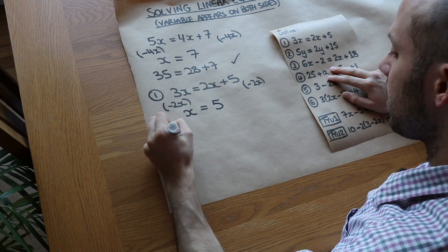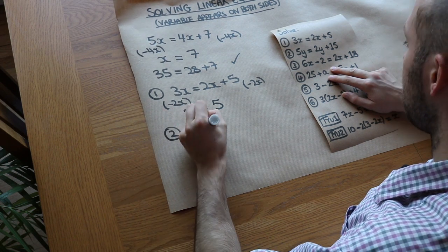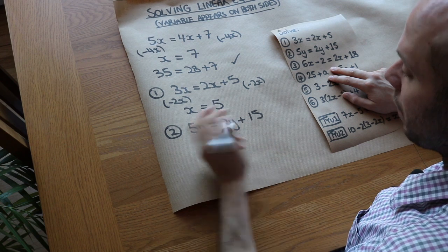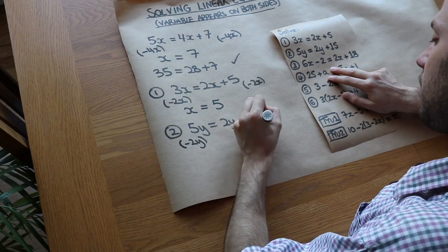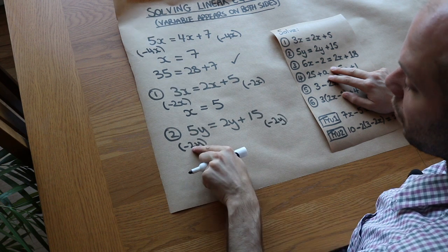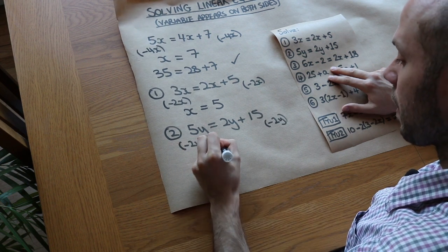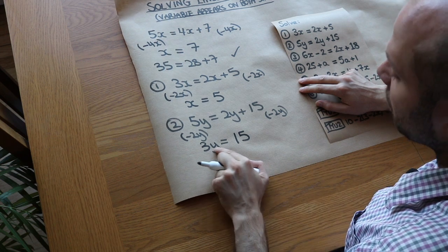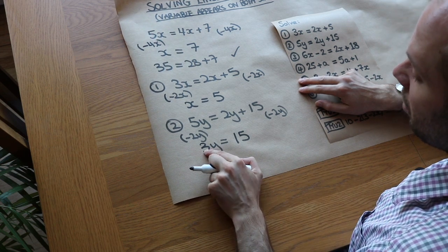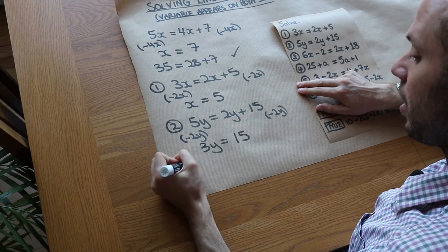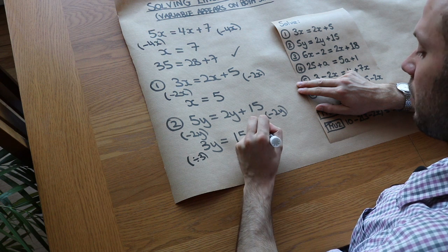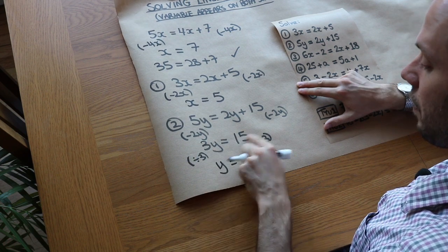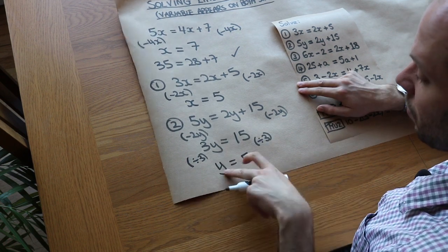This next one is a bit harder. We've got 5y is equal to 2y plus 15. There are more y's on the left hand side, so we subtract 2y from both sides. 5y minus 2y is 3y, and the 2y cancels leaving 15. This time we have an additional step because y isn't on its own — y is being multiplied by 3. So we divide both sides by 3, leaving y equals 5.